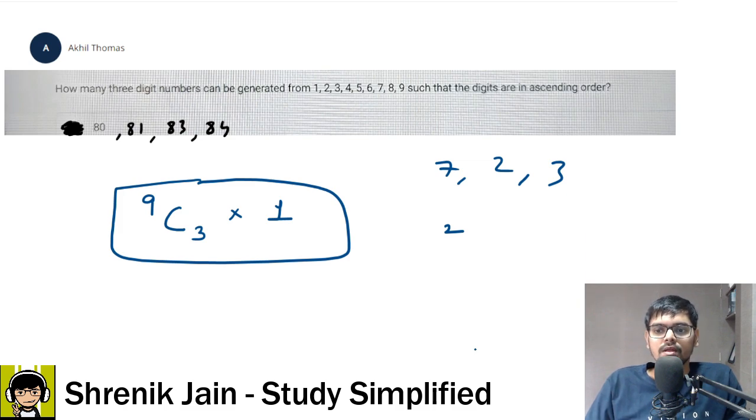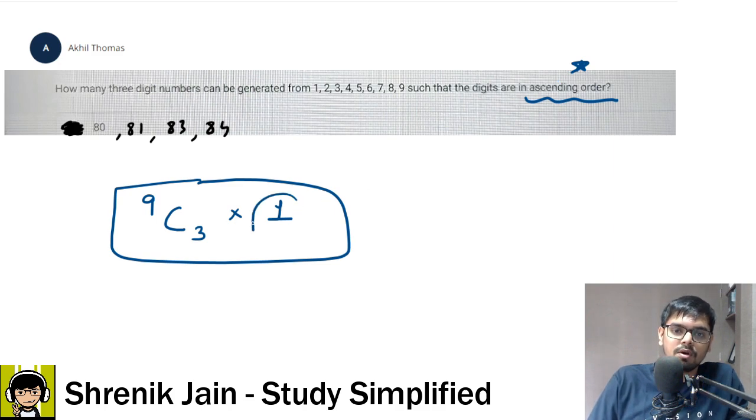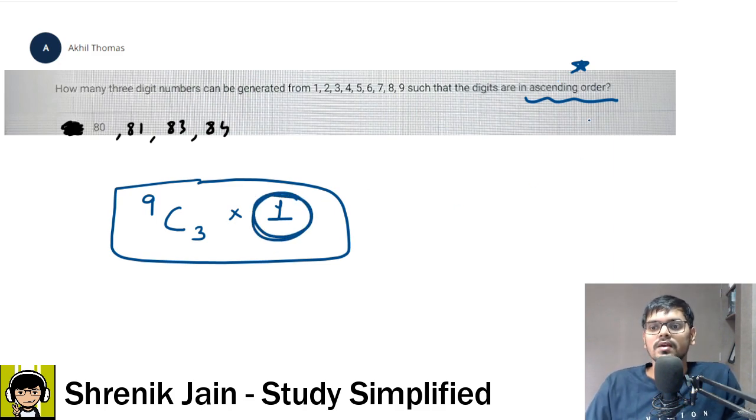Therefore, I hope you understood when ascending comes into the picture, then the number of ways of arrangement is only one. If ascending is removed from the picture, then the answer is nine C three into three factorial.